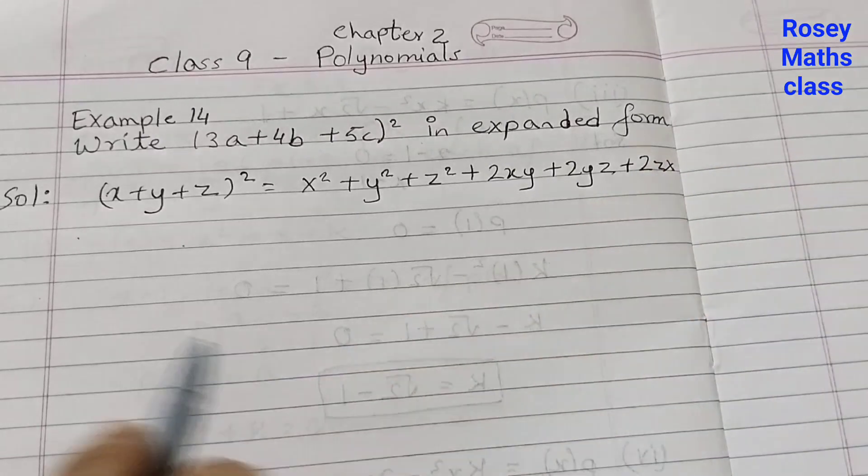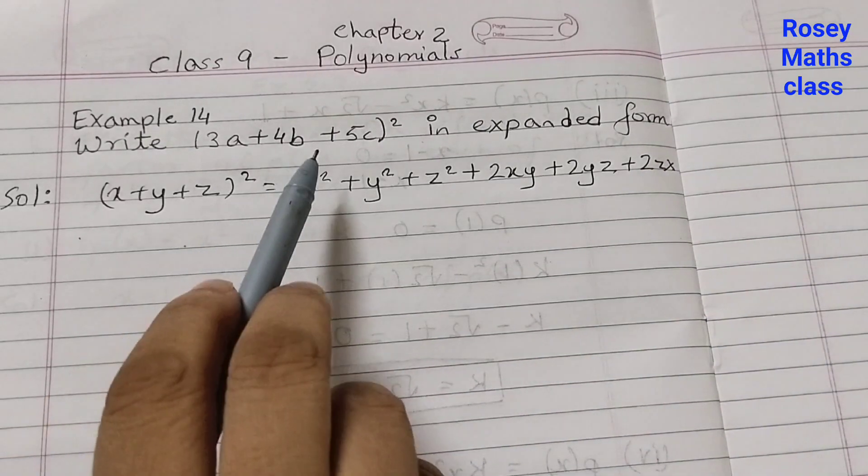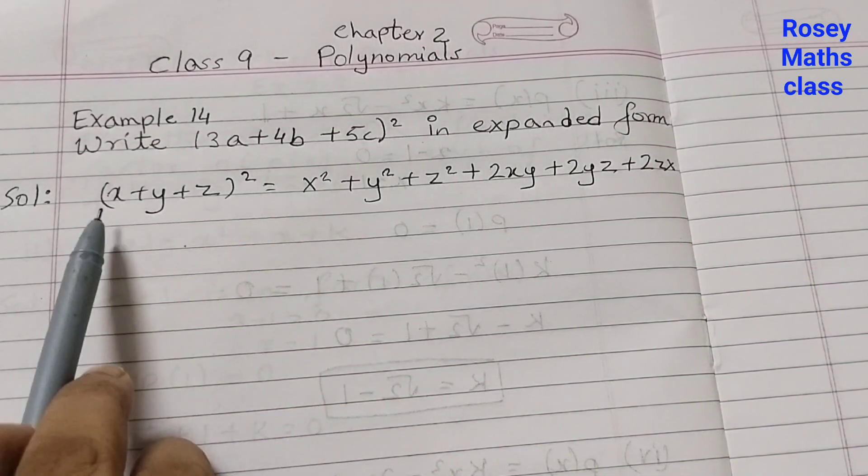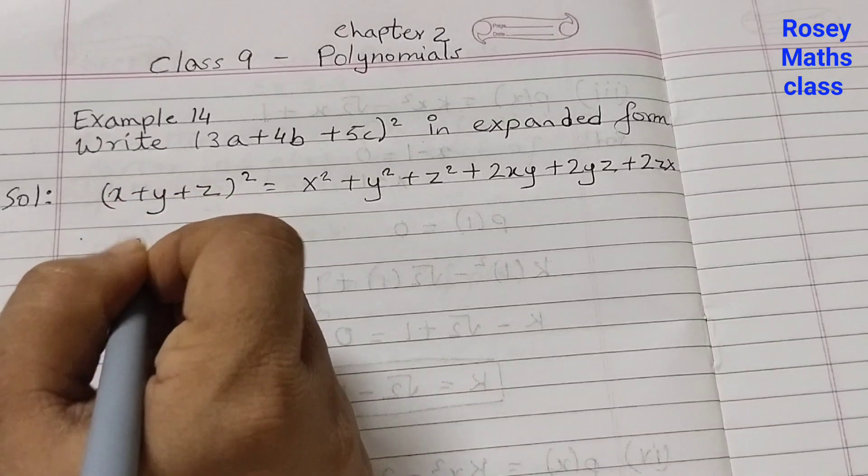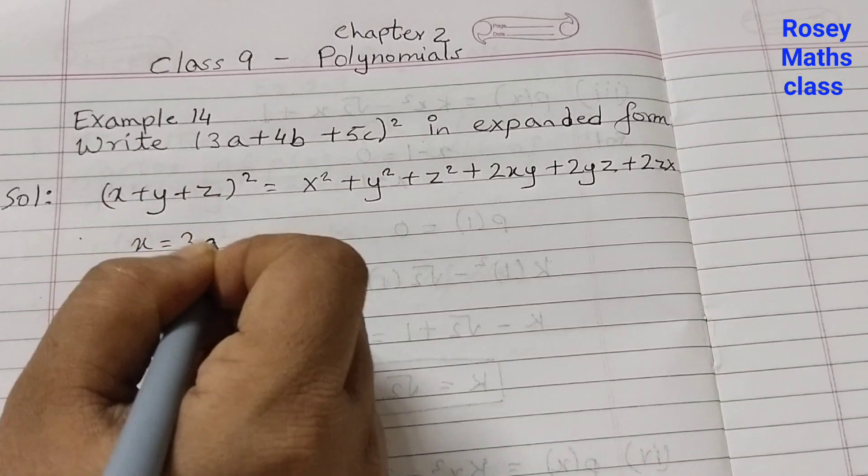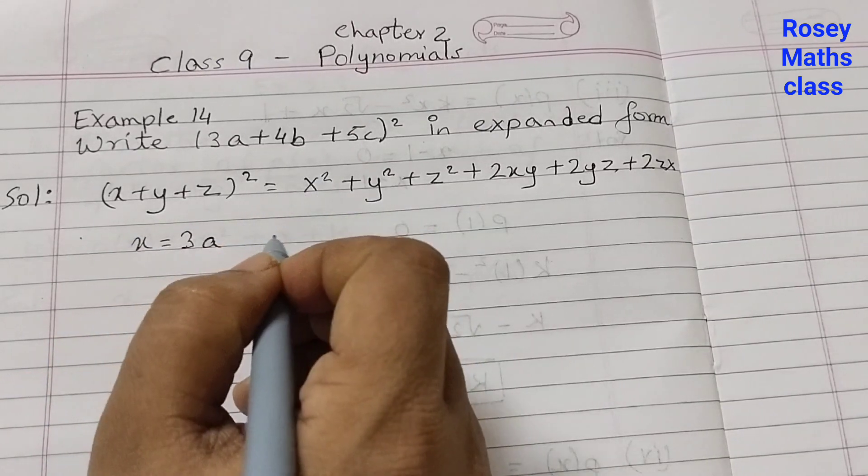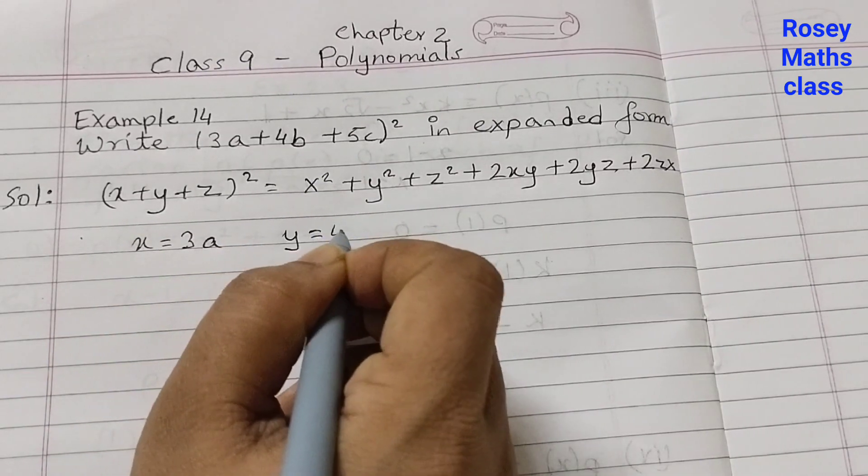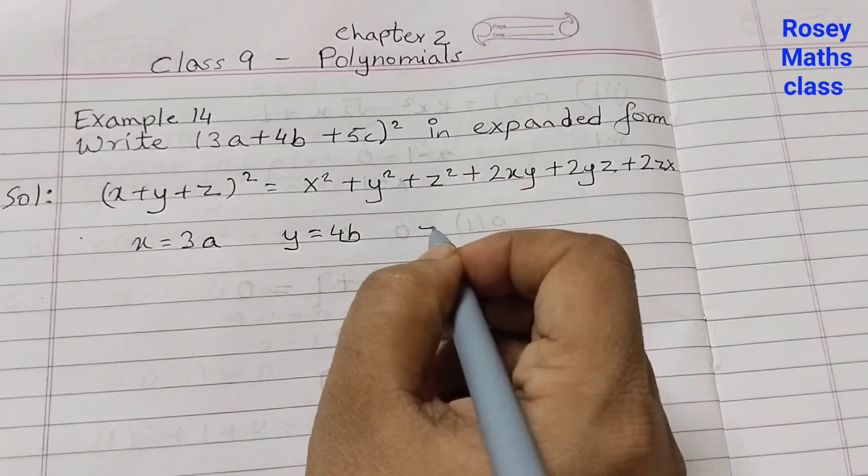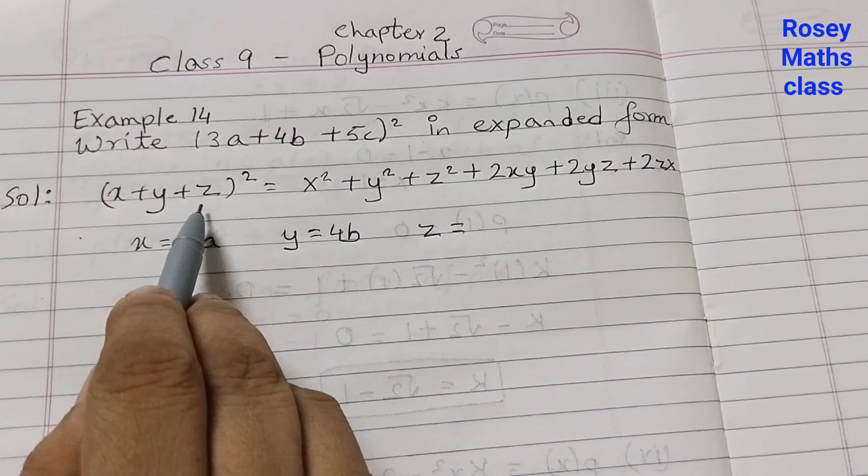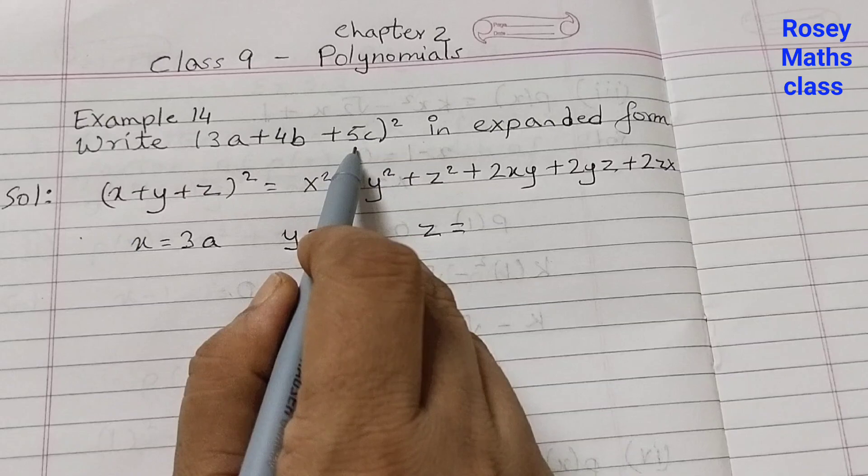Using this identity, we are going to expand this. Here, x is equal to 3a, y is equal to 4b, and z is equal to 5c.